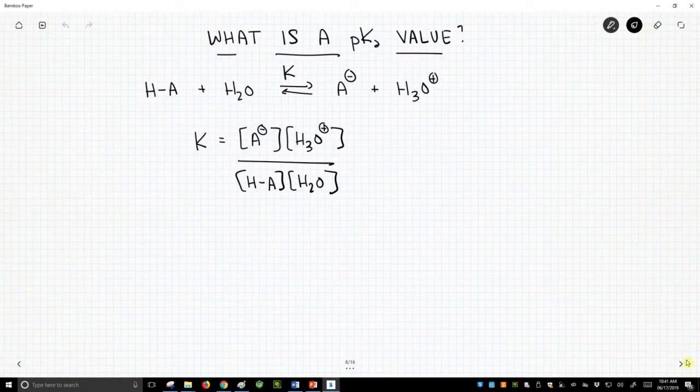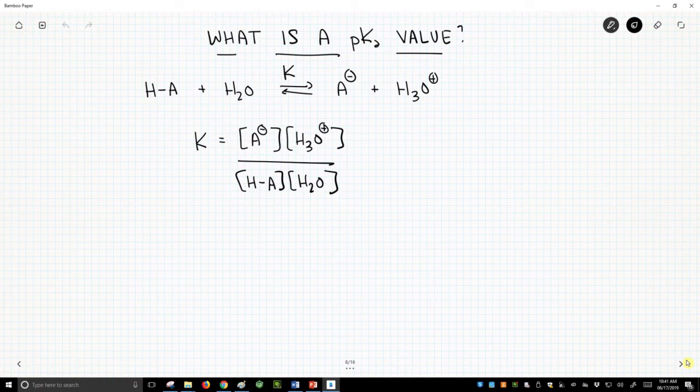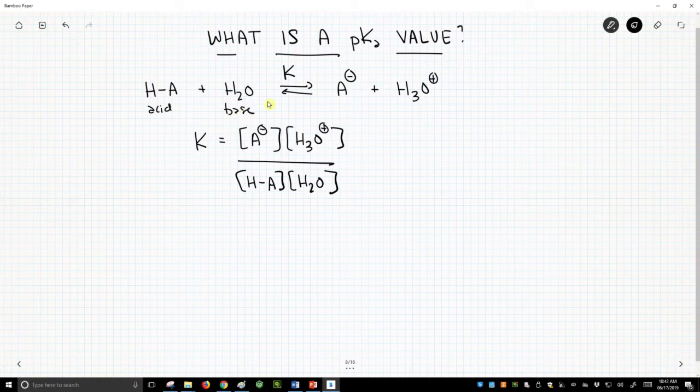So when we talk about an acid-base reaction, this is a reversible process. Our acid loses a proton to our base, and we form a conjugate base and a conjugate acid. In this case, A- and H3O+, respectively, and it's reversible.